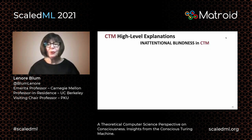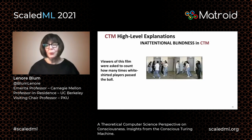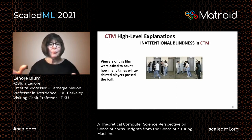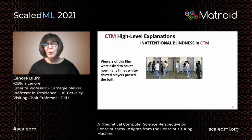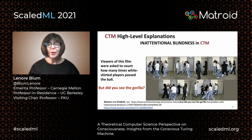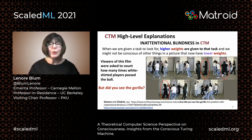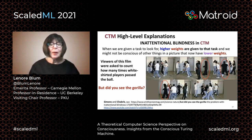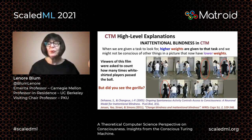Next is inattentional blindness in the CTM. In this film, there are white-shirted players and black-shirted players passing a volleyball around, and viewers are asked to count how many times white-shirted players pass the ball. Most people get it — 15. But did you see the gorilla? The CTM explanation: when given a task to look for, higher weights are given to that task, and we are not conscious of other things in the picture that now have lower weights. This explanation is consistent with neuroscience and psychological literature.